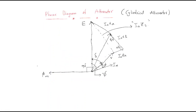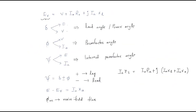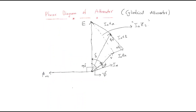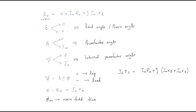Finally, the open circuit EMF E is obtained: the main field flux phi-m leads the internal EMF, then V leads the armature current. These are the very important phasor diagram relationships of the alternator. The Er voltage is called the air gap voltage, while E is the internal voltage.